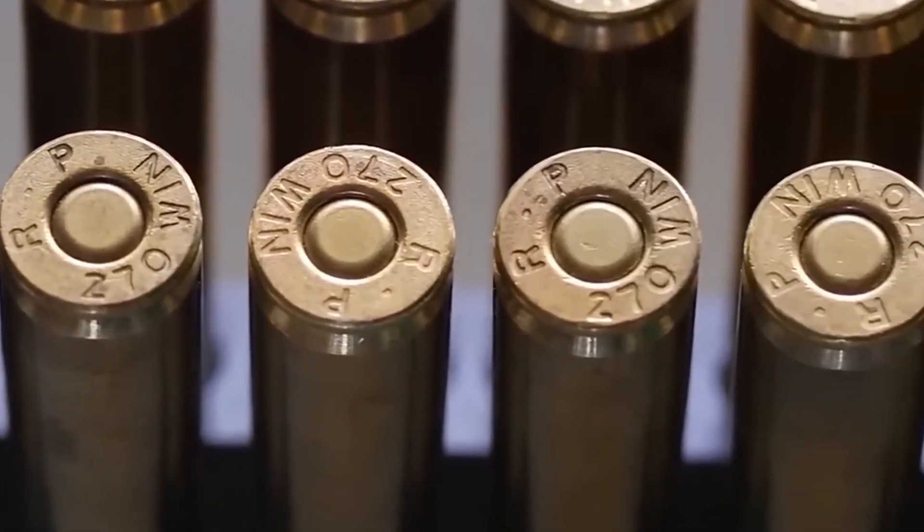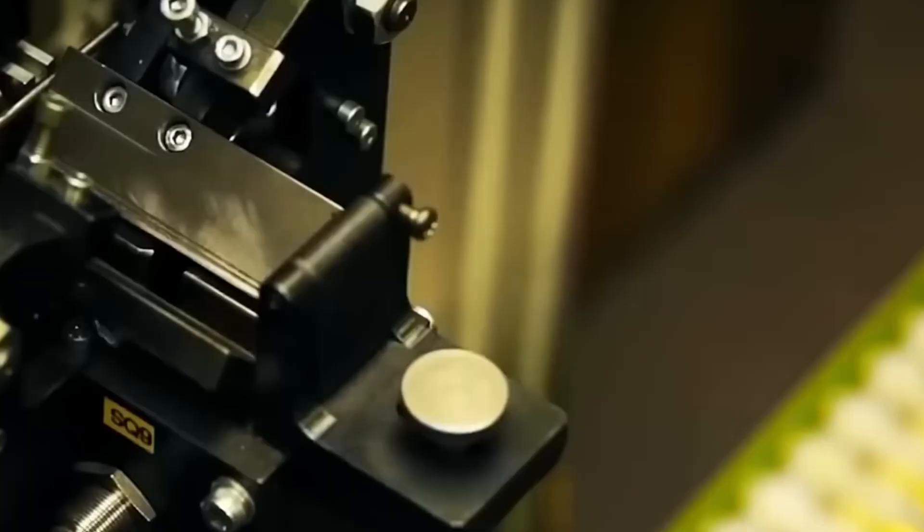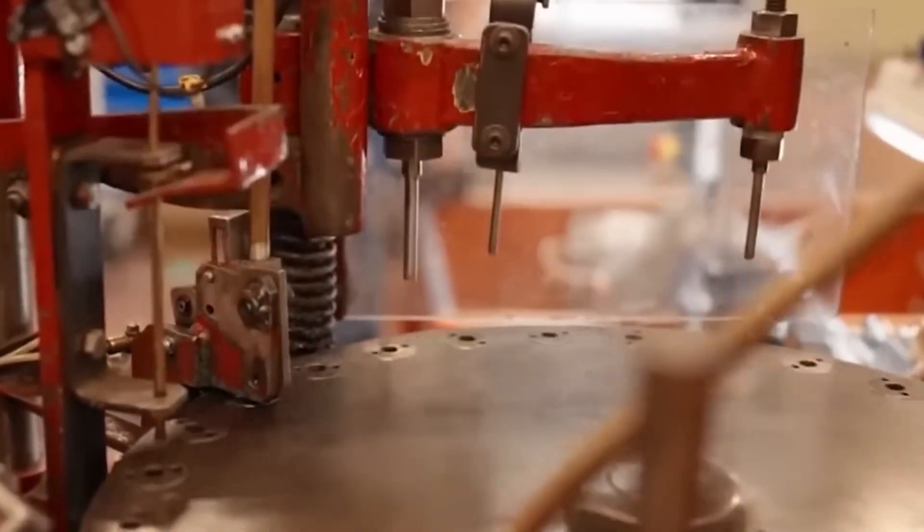At Remington Ammunition's plant in Lenoke, Arkansas, automated packaging systems can box and label over 1 million rounds per shift with separate lines for different calibers and product types.